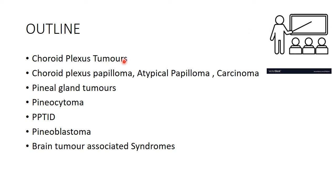In the choroid plexus tumours, we will be discussing about the papillomas, the atypical papillomas and the carcinoma. In the pineal gland tumours, we will be discussing about pineocytoma, pineoblastoma and the intermediate category, that is the pineal parenchymal tumour of intermediate differentiation. We will also be briefly discussing about the brain tumour associated syndromes.